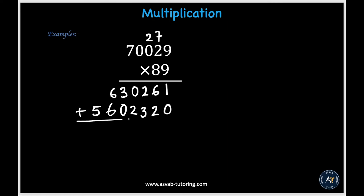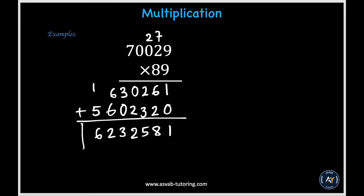Now we can add all these digits up by place value. In the ones place, 1 plus 0 gives us 1. In the tens place, 6 plus 2 gives us 8. In the hundreds place, 2 plus 3 gives us 5. In the thousands place, 0 plus 2 gives us 2. In the ten-thousands place, 3 plus 0 gives us 3. In the hundred-thousands place, 6 plus 6 gives us 12; put down 2 and carry 1. And 1 plus 5 gives us 6 for the millions place. So our final answer ends up being 6,232,581.